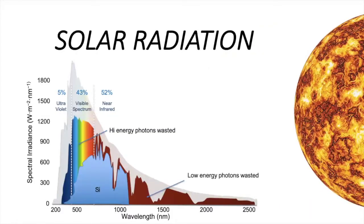So let's understand light. We'll start by separating light from solar radiation. Solar radiation is light, but it includes more than just light. Solar radiation covers a range from 300 to 1,500 nanometers — it can be a little bit more, but the atmosphere blocks a portion of that.